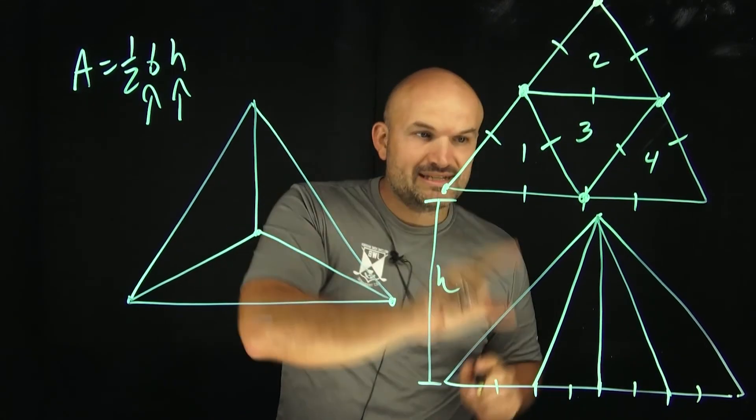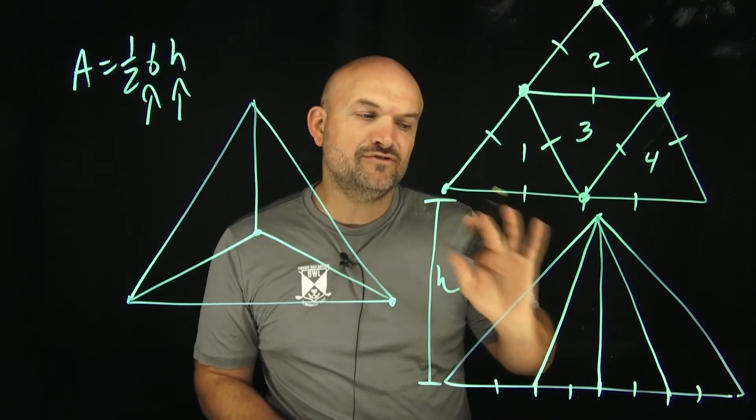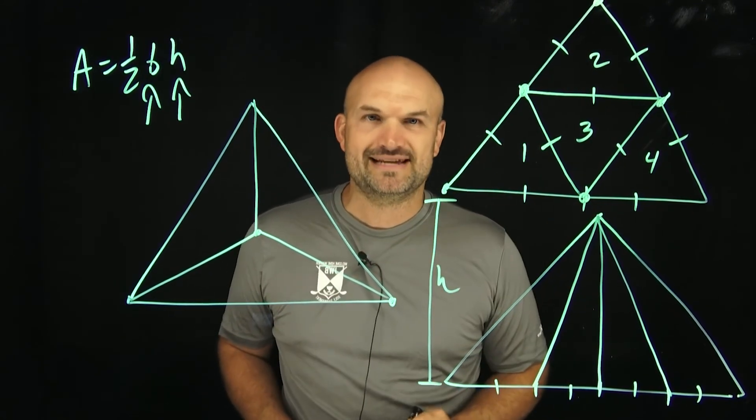So therefore, these two examples take this equilateral triangle and partition it into four separate triangles that all have the same area.